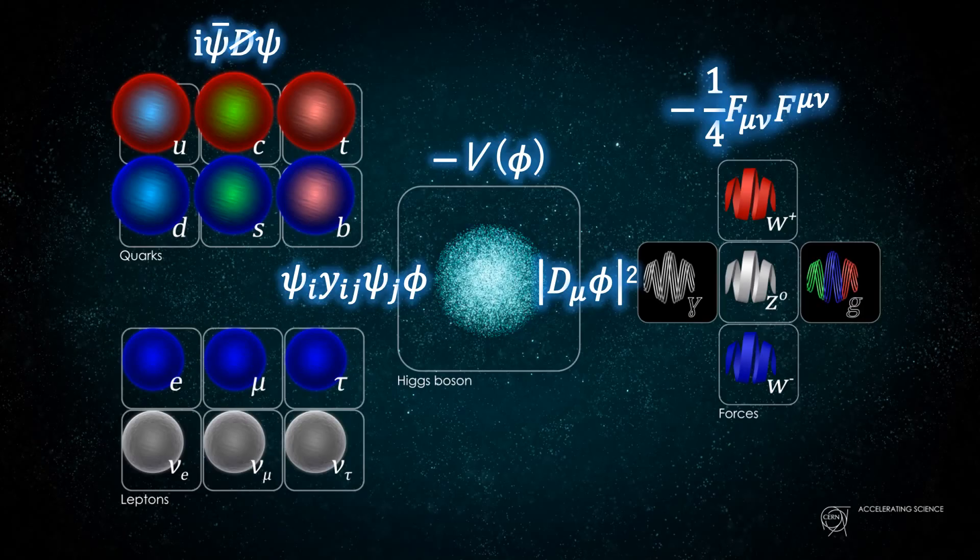Although the standard model of particle physics is an extremely successful theory, it is far from being a complete description of the universe. According to today's models, the universe consists only of 5% visible matter, which can be described by the standard model of particle physics.